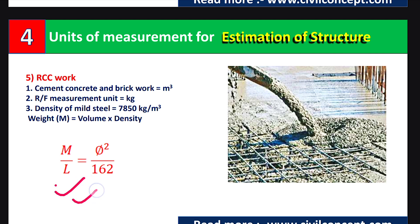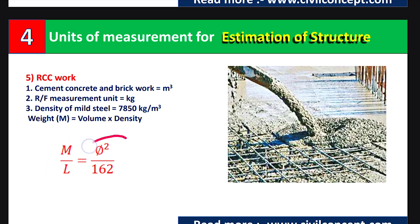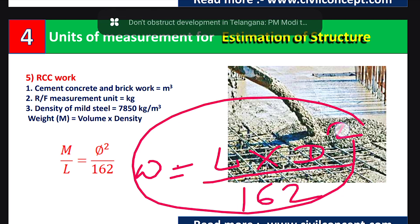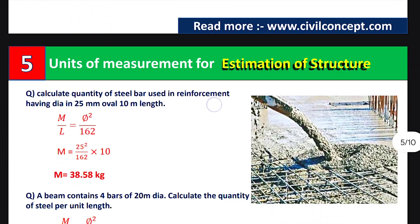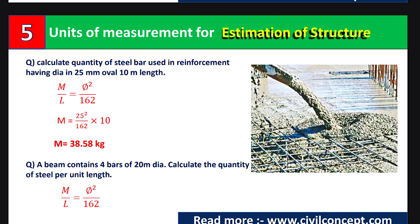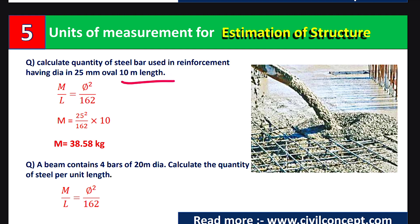The formula for weight of steel rod is: W/L = φ² / 162, where W is the weight, L is the length in meters, and φ is the diameter of the steel rod in millimeters. Rearranged: weight equals L (length in meters) × d² (diameter in mm) ÷ 162. For example, calculate the quantity of steel bars with diameter 25 mm over 10 meter length.